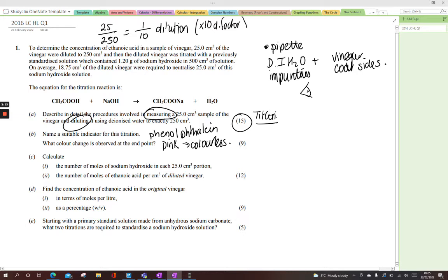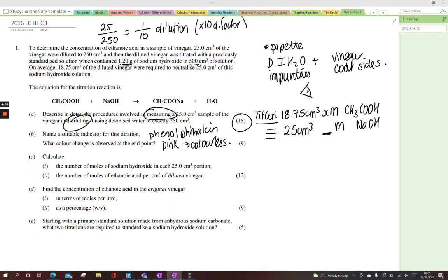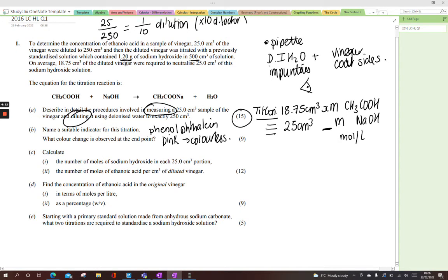And the diluted vinegar was titrated with a previously standardized solution. Standardized just means a solution whose concentration is accurately known, which contained 1.2 grams of sodium hydroxide in 500 cm³ of the solution. On average, 18.75 cm³. X molar, because I don't know its concentration, CH₃COOH, which is my ethanoic acid or my vinegar, was titrated against 25 cm³. Now in this question, we don't know its molarity yet of our sodium hydroxide. But what they provided me with is enough information in order to work out its molarity. So molarity means moles in a litre. What they told me is, there's 1.2 grams of NaOH in 500 cm³.